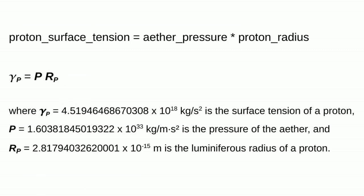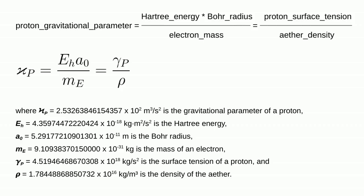All black holes have a surface tension equal to the pressure of the ether times the radius of the black hole. The surface tension of protons is a significant factor for many of the fundamental constants of physics. It is easy to determine a proton's gravitational parameter from the Hartree energy of an electron times the Bohr radius divided by the electron's mass. It is even easier to determine a proton's gravitational parameter from the proton's surface tension divided by the density of the ether.